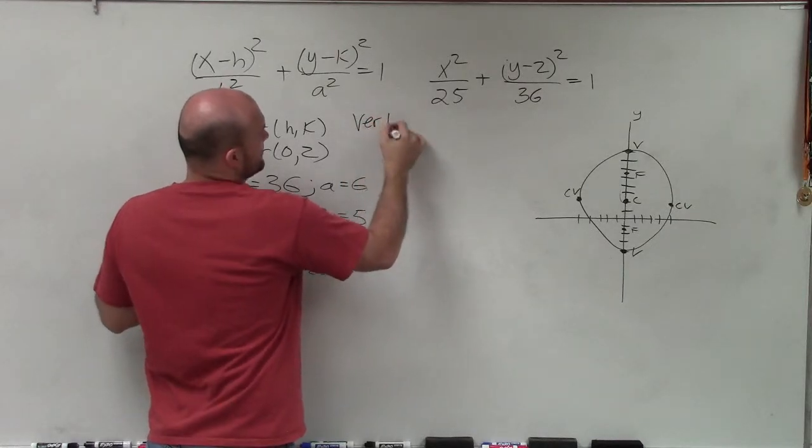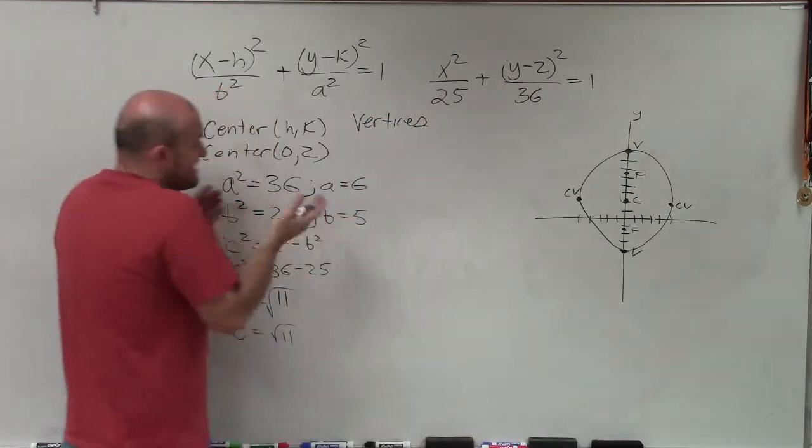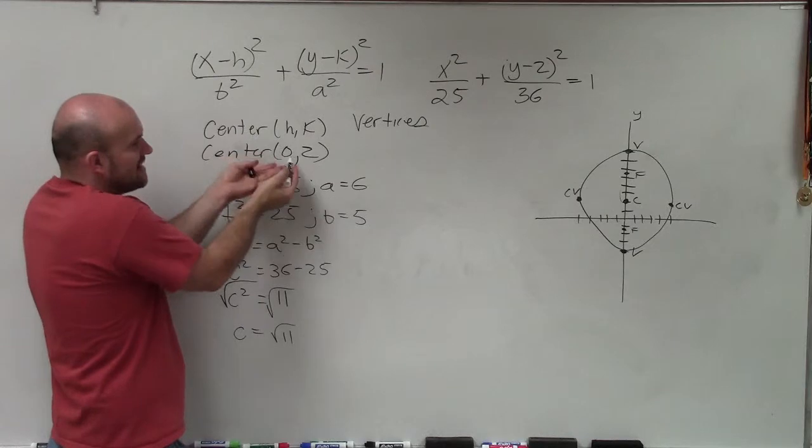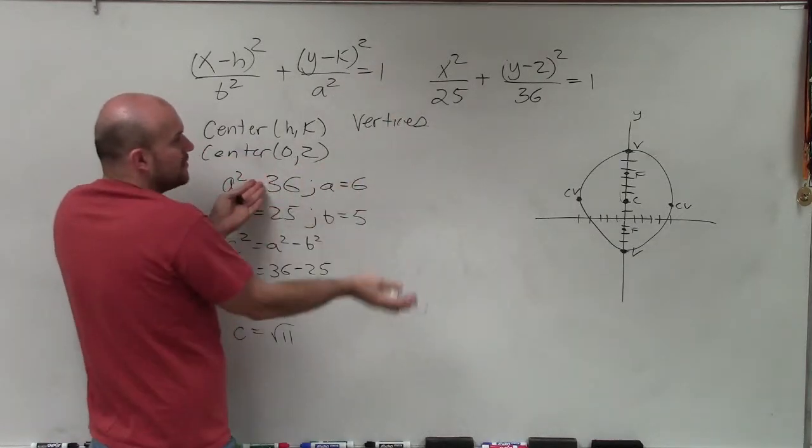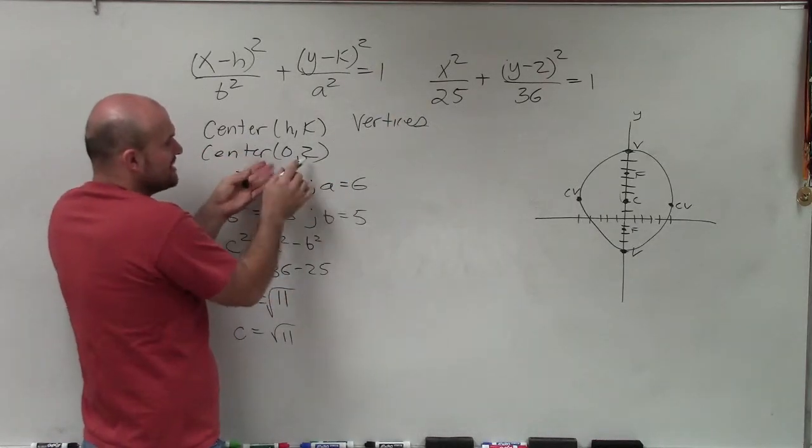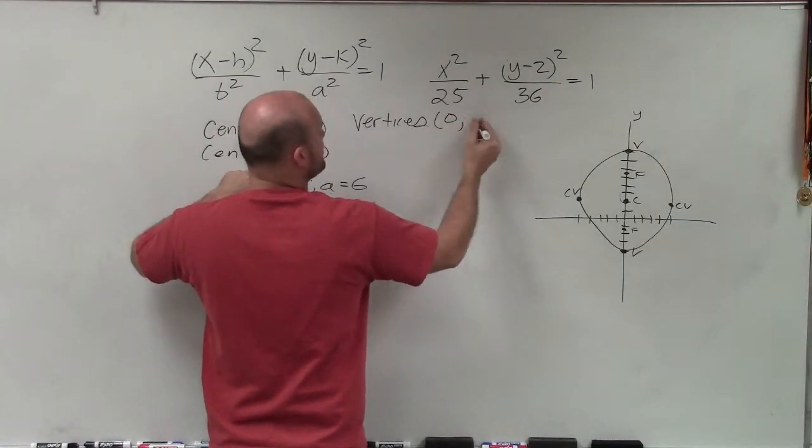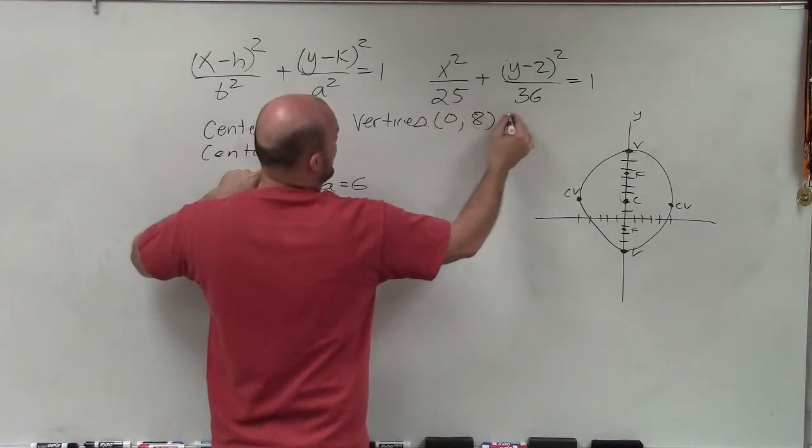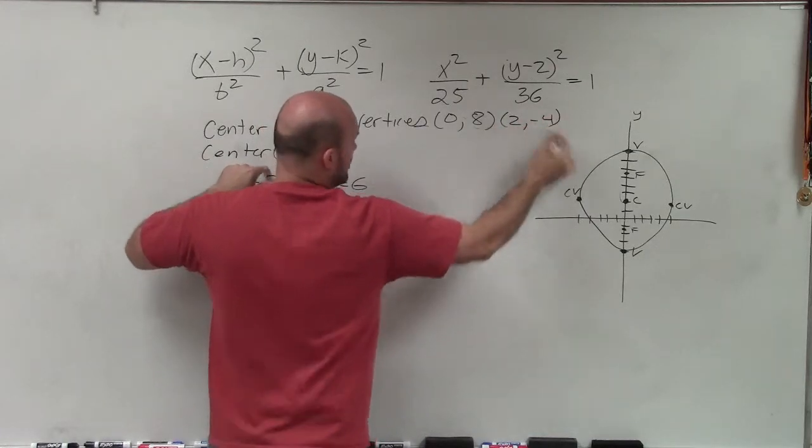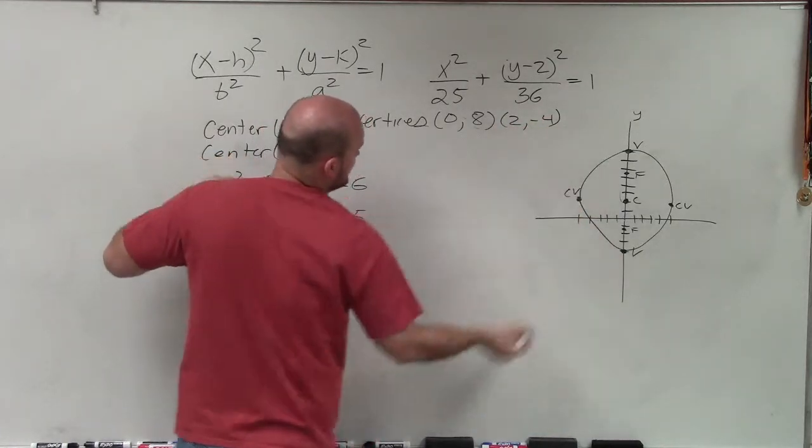Remember, the vertices have the exact same x coordinate. They're just up and down six units from the center. So my vertices are going to be 0, 2 plus 6, which would be 8. And then 2 minus 6, which would be negative 4, which you can verify my two vertices.